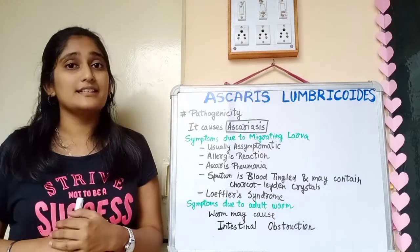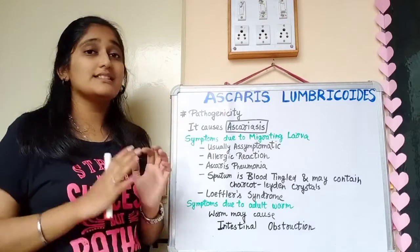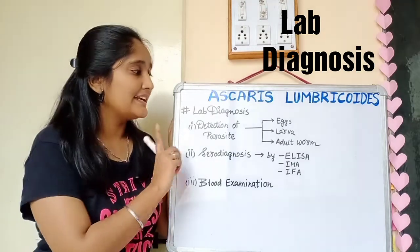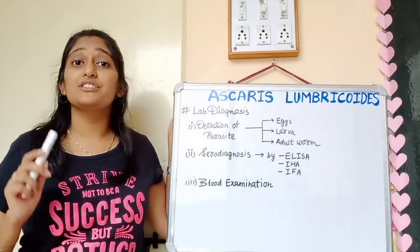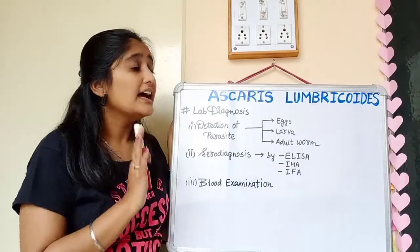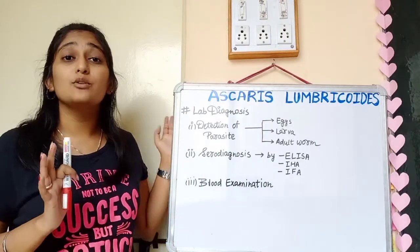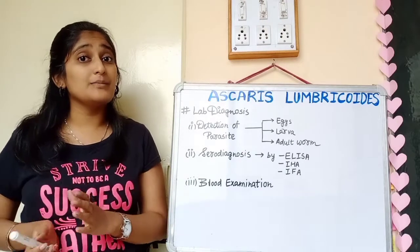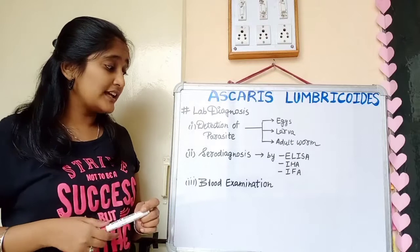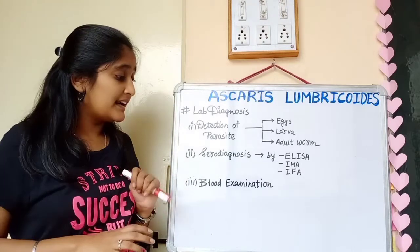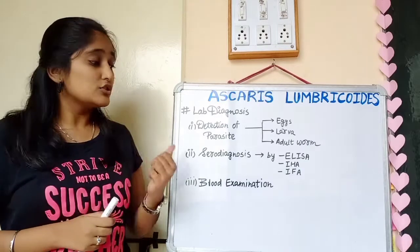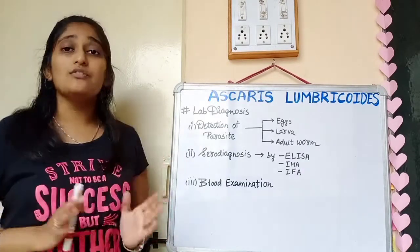Lab diagnosis of Ascaris lumbricoides uses three methods. First, detection of the parasite: eggs can be found in the patient's feces from the gravid female; larvae can be seen in gastric washing during Löffler's syndrome; and adult worms can also be seen in the stool. Second, serodiagnosis using ELISA, IHA, or IFA. Third, blood examination — in the early migratory stage, eosinophilia can be detected.